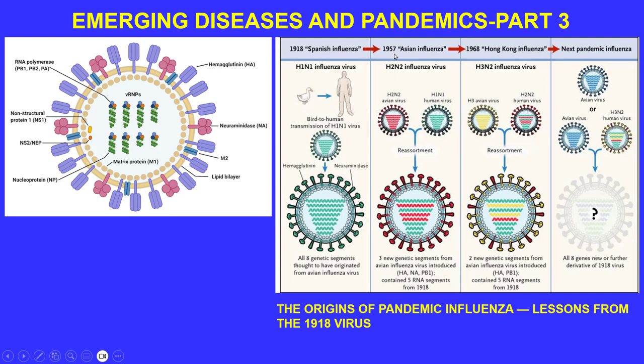In the Asian influenza of 1957, you had the avian virus H2N2 and the human virus H1N1 co-infecting cells, leading to genetic reassortment — producing a new strain with some avian and some human genetic segments, and five RNA segments tracing back to the original 1918 Spanish influenza virus.